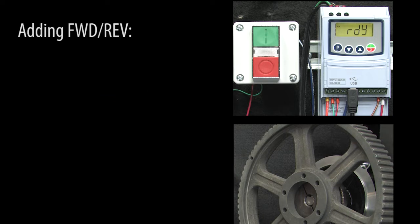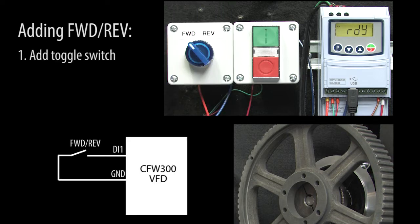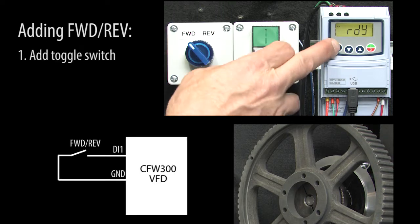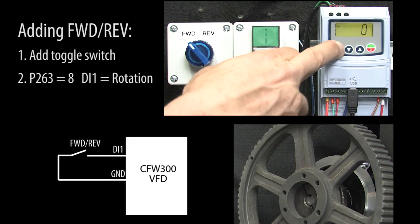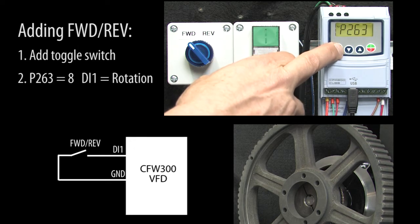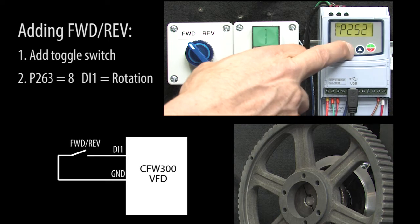Well, to add forward reverse control, we only need to do three things. First, add a toggle switch to digital input 1. Second, go to parameter 263 and enter an 8. That tells digital input 1 that it will be controlling the direction of rotation.